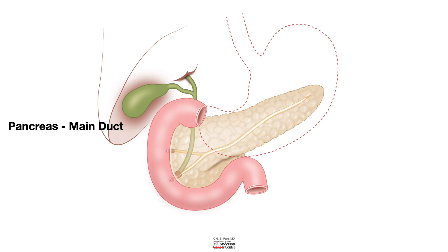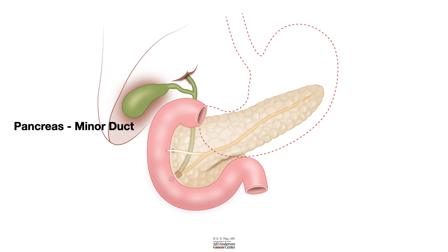There are two main pancreatic ducts. The big one is the main pancreatic duct, running the whole length of the pancreas from tail to head. It usually joins up with the very end of the common bile duct just before they both empty into the duodenum through the major ampulla — so they often share a common exit point. There's also a smaller duct, the minor pancreatic duct or duct of Santorini, which sometimes drains separately through the minor ampulla, just above the major one.